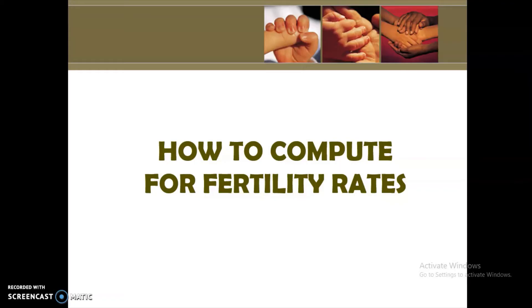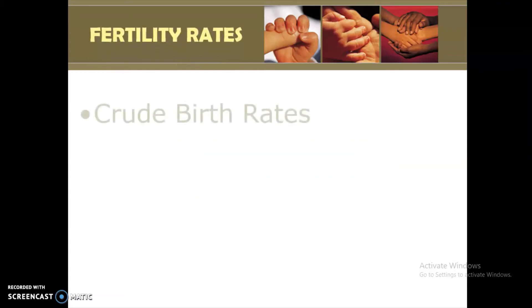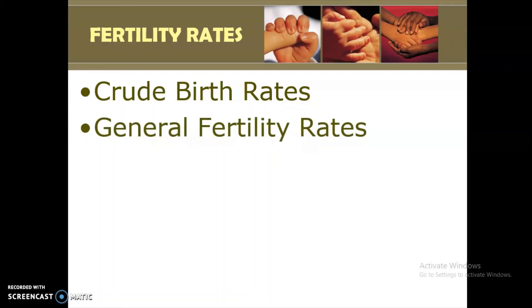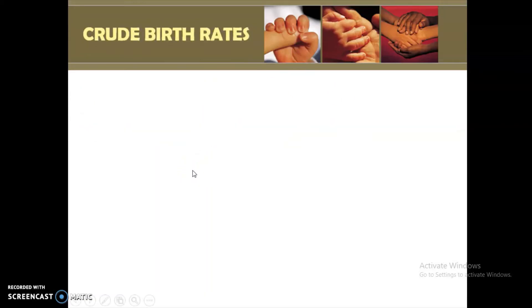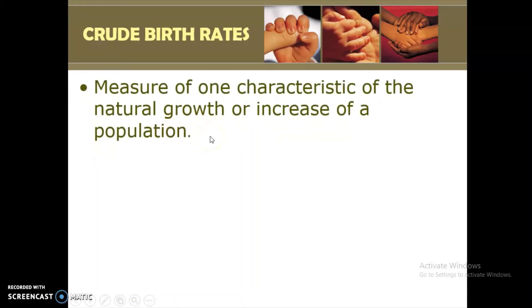Let us discuss on how to compute for fertility rate. There are two specific types of fertility rate: we have your crude birth rate and your general fertility rate. Crude birth rate measures one characteristic of the natural growth or increase of a population — so it measures the increase in the population.